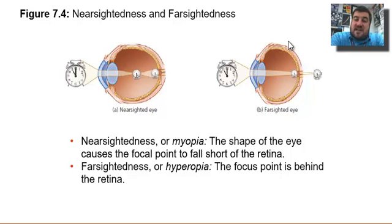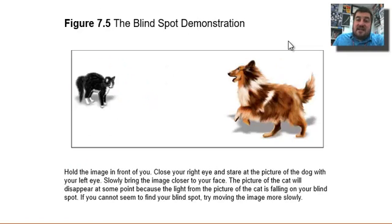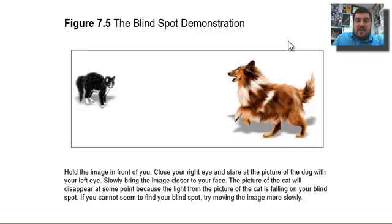Nearsightedness and farsightedness are related to the actual shape of the eye, which can change where the focus falls — too far away or too close. Mr. Snyder is nearsighted. There's also a blind spot demonstration: move your head slowly back and forth toward the screen, and if you follow the directions, the cat in the image will disappear.